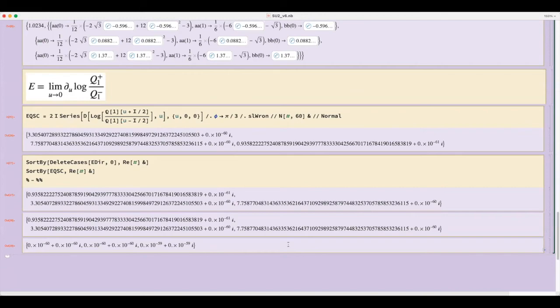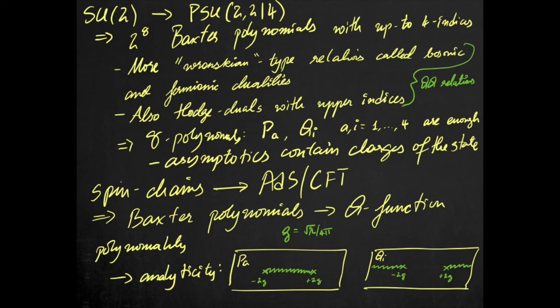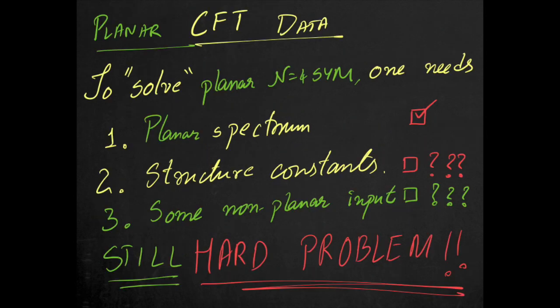This reverse logic flow is exactly the logic of the quantum spectral curve, and as we can see, it is much, much more efficient. In going from the symmetry group SU(2) to PSU(2,2|4), the symmetry group of N=4 Yang-Mills, we go from 2 to 2^8 Baxter polynomials. Further, in going from spin chains to the AdS-CFT integrable system, polynomiality assumptions now get upgraded to specific analytic properties of Q functions. Thus, the quantum spectral curve enables us to, at least in principle, solve the planar spectrum of N=4 super Yang-Mills. There are still many open questions about structure constants, so please come to my talk on Friday to know more.